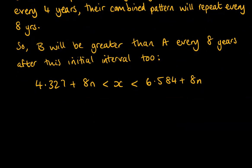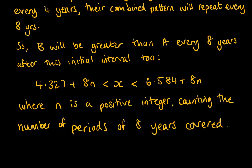And then we just define that N is that counter. So we finish up by saying where N is a positive integer counting the number of periods of eight years covered.